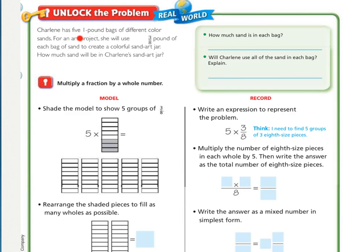Charlene has 5 1-pound bags of different colored sands. For an art project, she will use 3/8 of a pound of each bag of sand to create a colorful sand art jar. How much sand will be in Charlene's sand art jar? Underline what you're being asked to find, circle the important information, and see if you can answer the questions in this green rectangle.